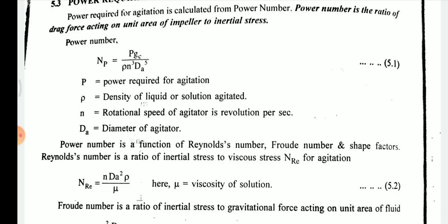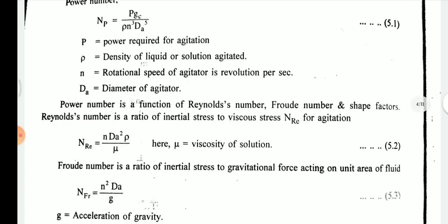The power number is a function of Reynolds number, Froude number, and shape factor. Reynolds number is the ratio of inertial stress to viscous stress. For agitation, the Reynolds number NRe is given by n·da²·ρ / μ, where μ is the viscosity of the solution.